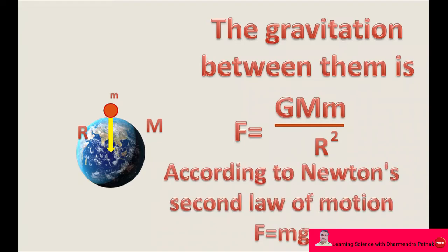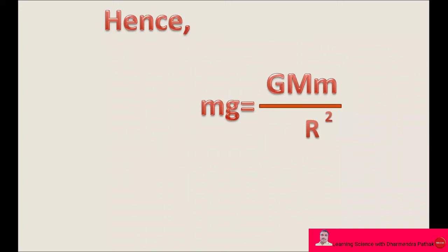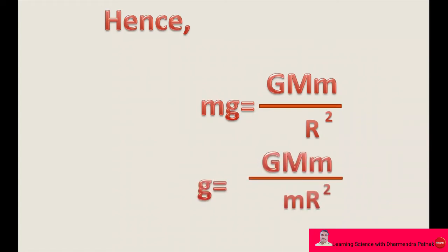According to Newton's second law of motion, force between them is equal to the product of m and g, or mass and acceleration due to gravity. Hence, mg is equal to G, capital M, small m upon R square, or acceleration due to gravity g is equal to G capital M upon R square, where the small m, mass of the object, gets cancelled because equal force is supplied by the earth.